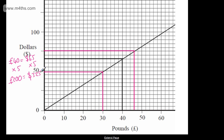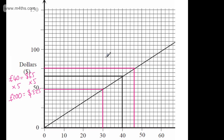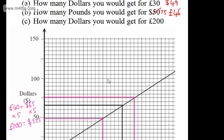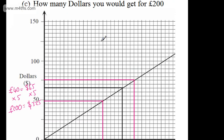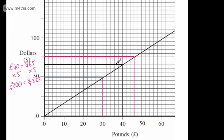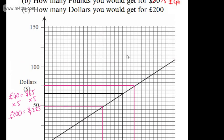There are lots of different ways to do that question. We could have used other values — for example, £50 and then times by 4. Just find a convenient point on the graph to get a value and then multiply up.